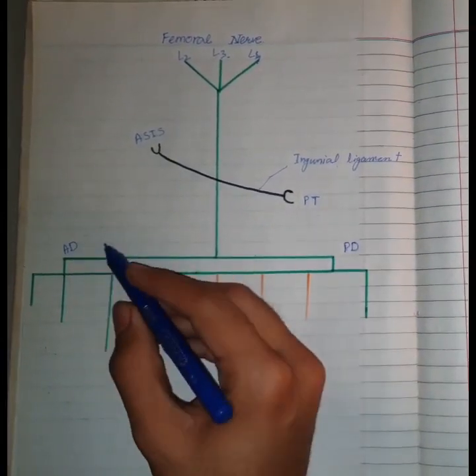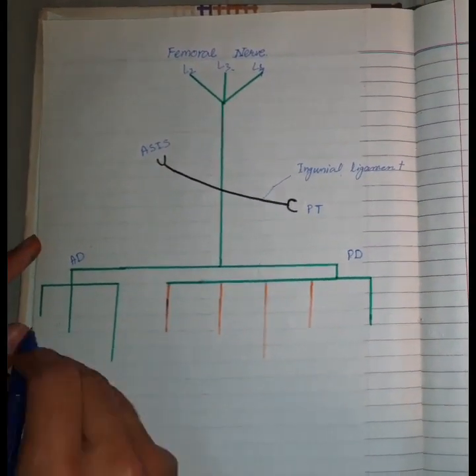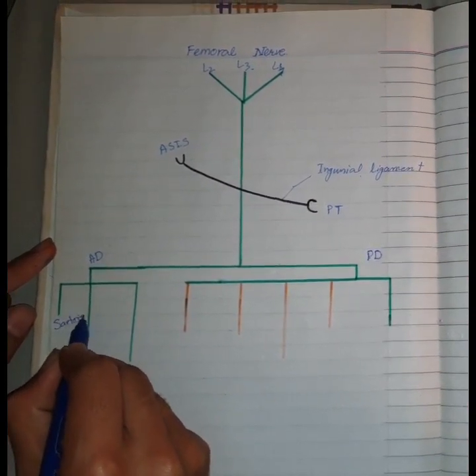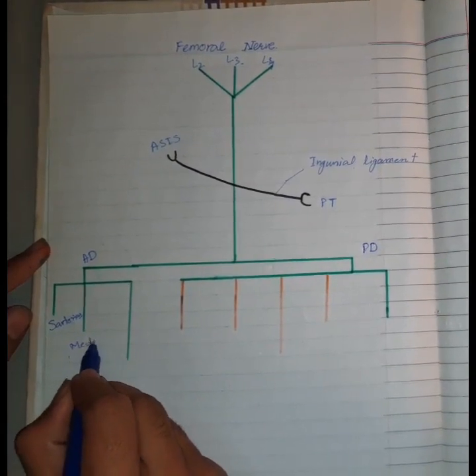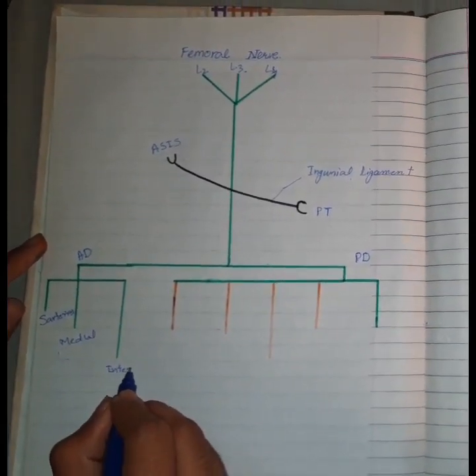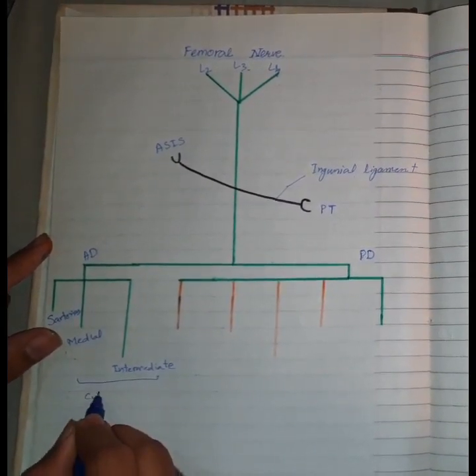The anterior division gives only one muscular branch and two cutaneous branches. The muscular branch goes to sartorius, and the cutaneous branches are medial and intermediate cutaneous nerves of thigh.